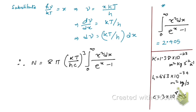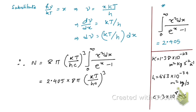The integral from zero to infinity of x² dx / (e^x − 1) has the value 2.405, and this is already given in the question. So using that result, we arrive at the expression for the total number of photons per unit volume.